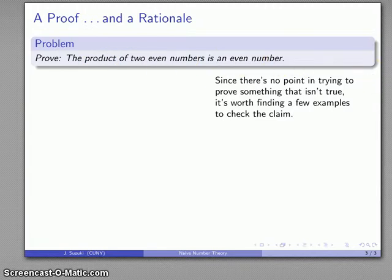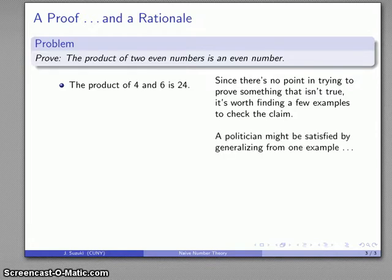I want to find two even numbers and see if their product is actually even. For example, 4 and 6: if I multiply them together I get 24, and that's an even number. If I'm a politician or somebody who talks about politics on television, I might be satisfied by generalizing from one example, but let's try to do a little bit better than political commentators.